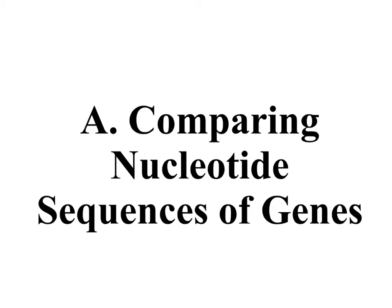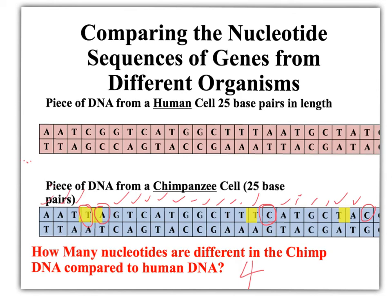The first technique we're going to look at is sequencing DNA. Scientists can extract DNA from cells and run it through sequencing machines that will give you a readout of the sequence of bases in the DNA. Scientists can then compare those between different species and identify bases that have changed by genetic mutation. We can also make the assumption that the more similar the sequence of bases, the more closely related the two species are.